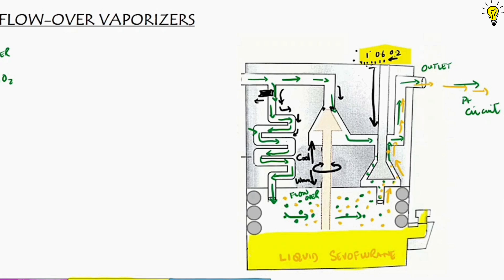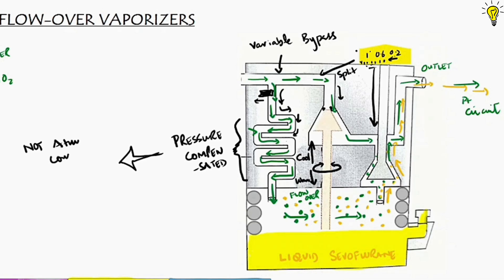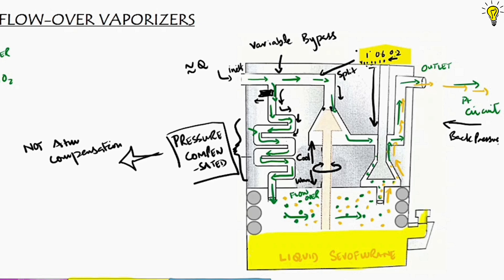Since the concentration dial and temperature bimetallic strip determine the splitting ratio at the inlet, the bypass flow changes — this is why it is called variable bypass. Second, the serpentine labyrinth serves as a pressure compensator. By pressure compensation, it doesn't mean compensating for atmospheric pressure in the ambience — a common confusion. It basically means compensating for changes in pressure at the inlet of the vaporizer and back pressures generated by the pumping effect, which may alter the vapor output.